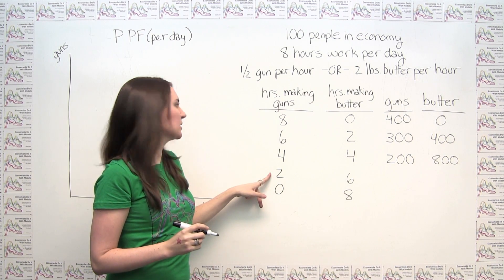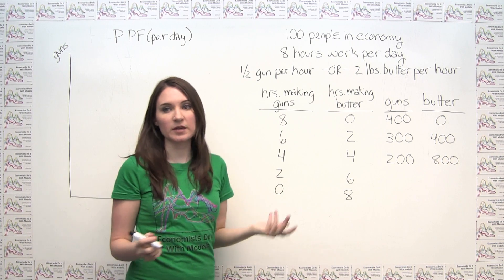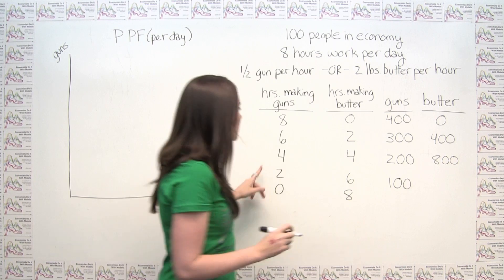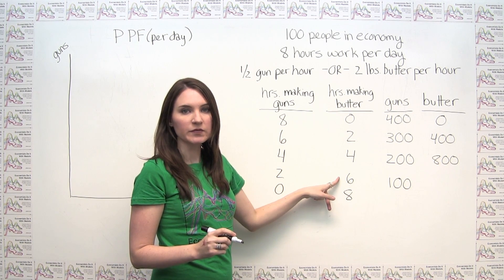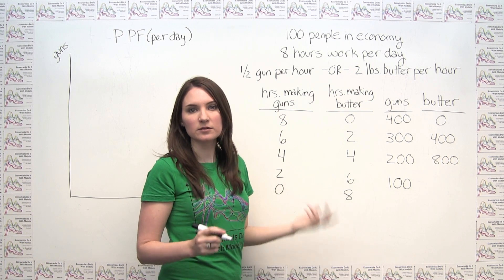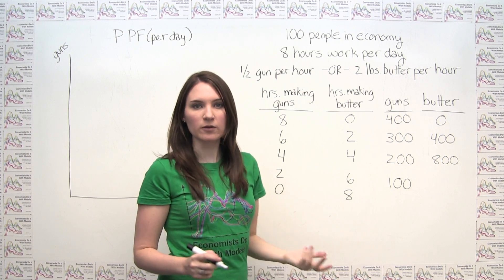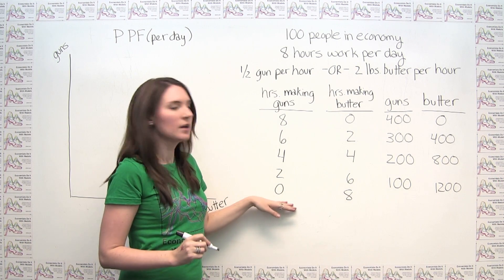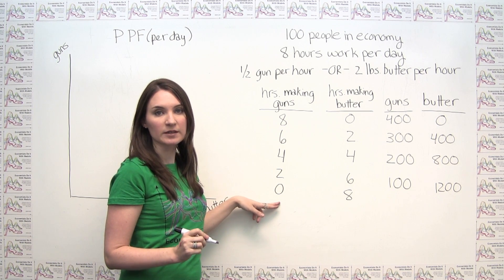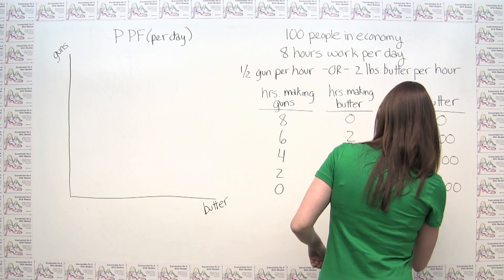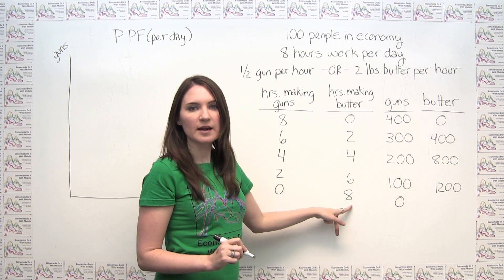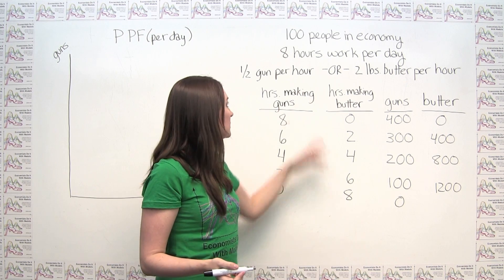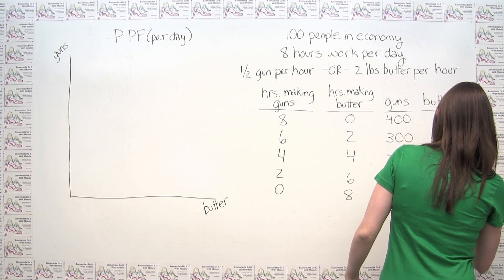If each person is spending two hours making guns at half a gun per hour, each person makes one gun per day — a hundred people gives us a hundred guns total. If each person is spending six hours making butter at two pounds of butter per hour, then each person is making twelve pounds of butter per day, so a hundred people gives us twelve hundred pounds of butter total. Finally, if zero hours are devoted to making guns, we end up with no guns. With eight hours dedicated to making butter at two pounds per hour, each person makes sixteen pounds of butter — a hundred people gives us sixteen hundred pounds of butter.